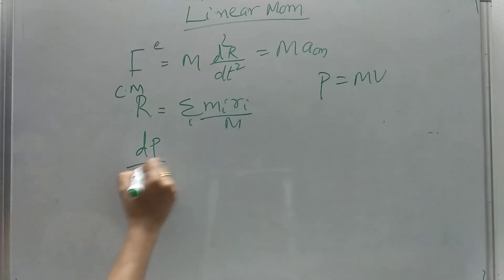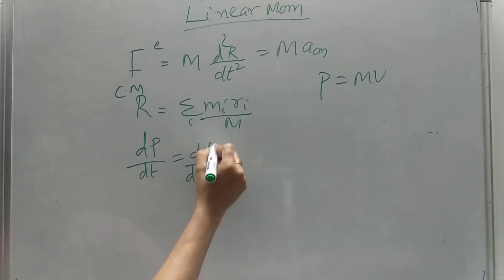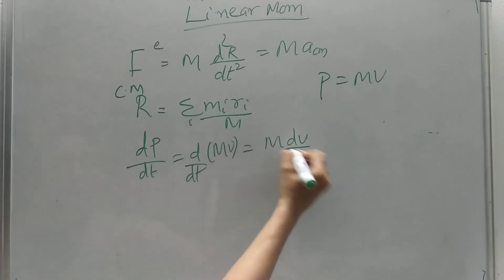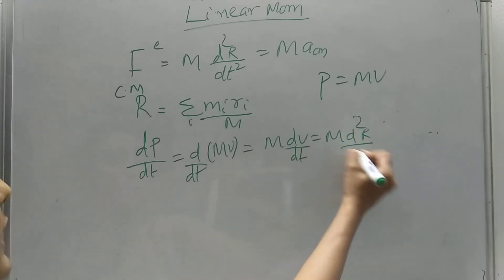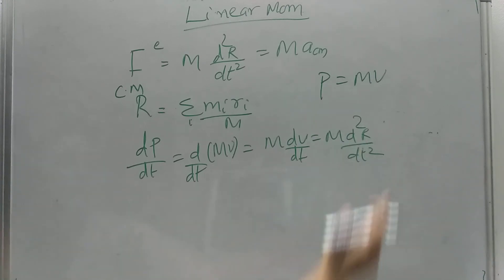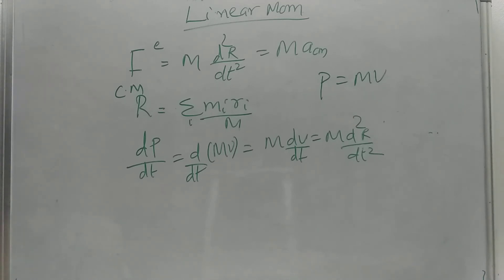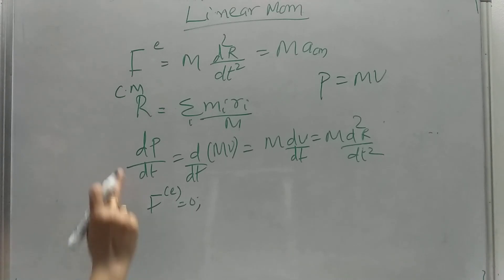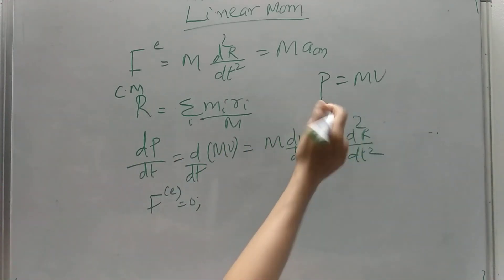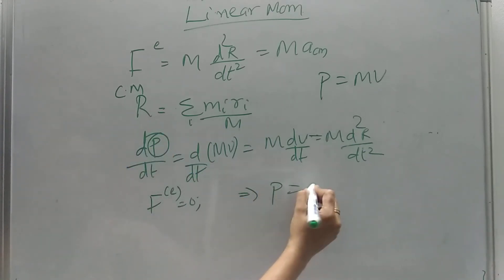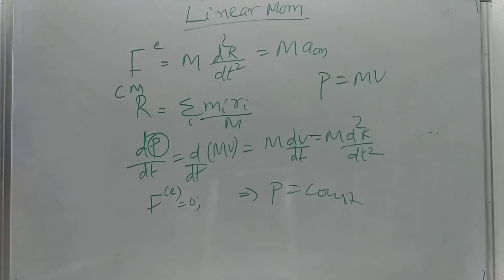Differentiating, dP/dt = M * dV/dt = M * d²R/dt², so the rate of change of momentum equals MA, which equals the external force. Therefore, if the external force is zero, P remains constant. This is the conservation of linear momentum: whenever the external force acting on the system is zero, the total linear momentum is constant.